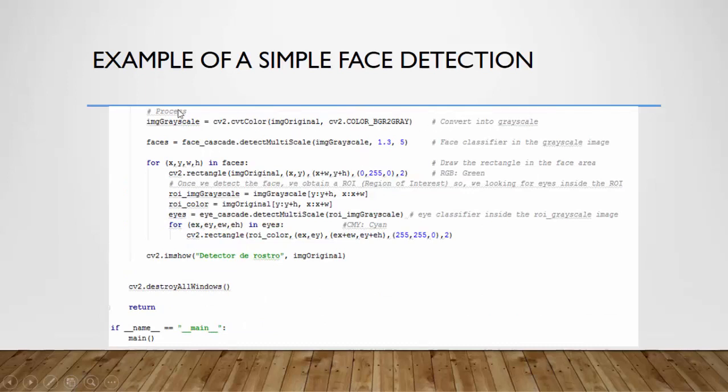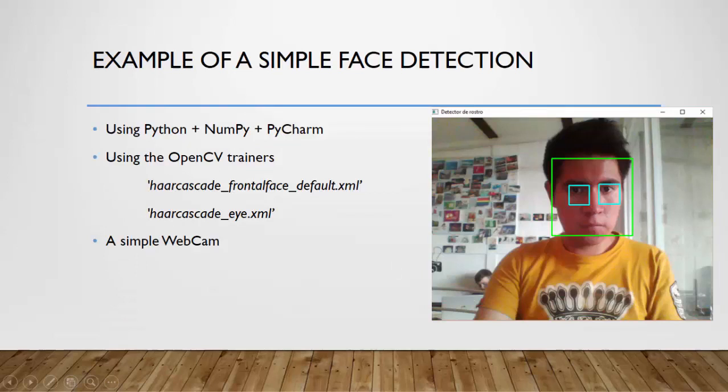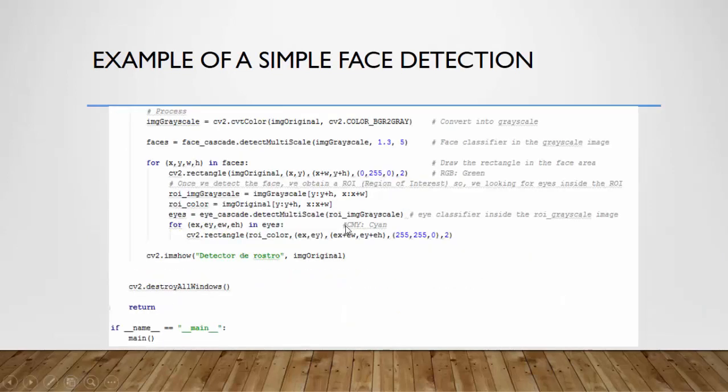Then we have the process. We have to convert the original image into grayscale and apply the face classifier into the grayscale image. We will draw the rectangle and this color will be green. So once we detect the face, we obtain a ROI or region of interest. So we're looking for eyes inside this ROI. We obtain the ROI and the eyes, we apply the eye classifier inside the ROI grayscale image. We will use this cyan rectangle. These two rectangles are drawn. Finally, we show the video with the command imshow. And we put this title. In Spanish is detector de rostro, that is face detecting in English.